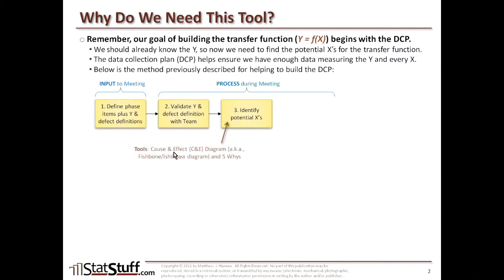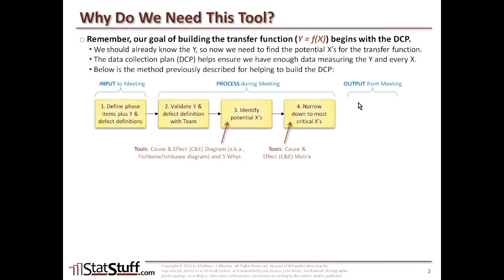We might use several tools, like the cause and effect diagram — which is also the Fishbone and Ishikawa diagram — and also the 5Ys tool. Once we've identified the potential Xs, we move on to narrowing down those potential Xs to what we consider to be the most critical Xs. This is where we might use the cause and effect matrix, or the C and E matrix. Then the last step is an output from the meeting: building the data collection plan for those critical Xs, using something like the sample size calculator and consideration for short and long term data.